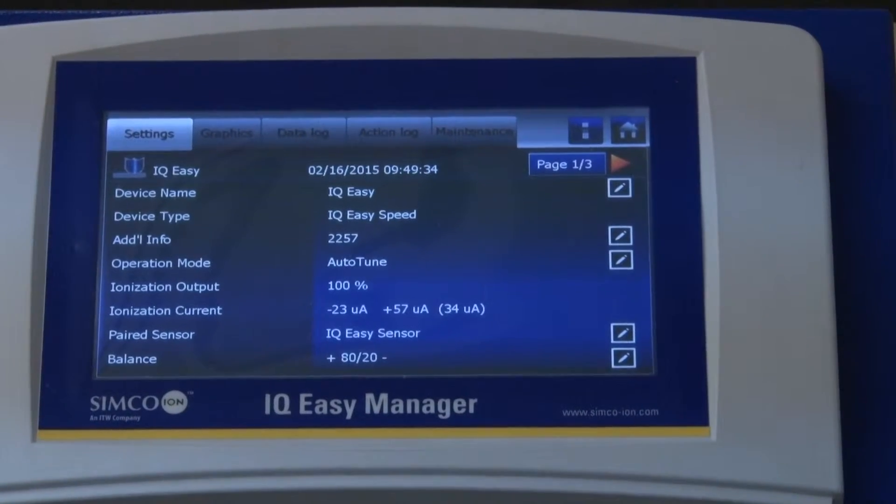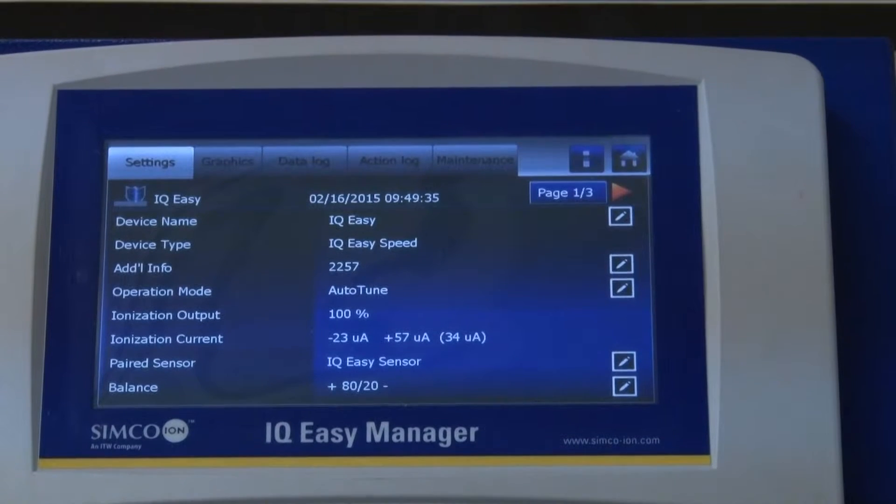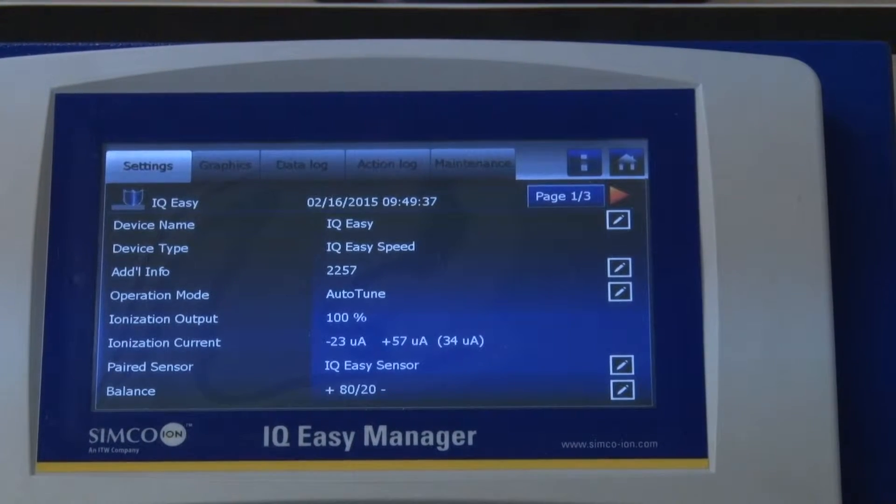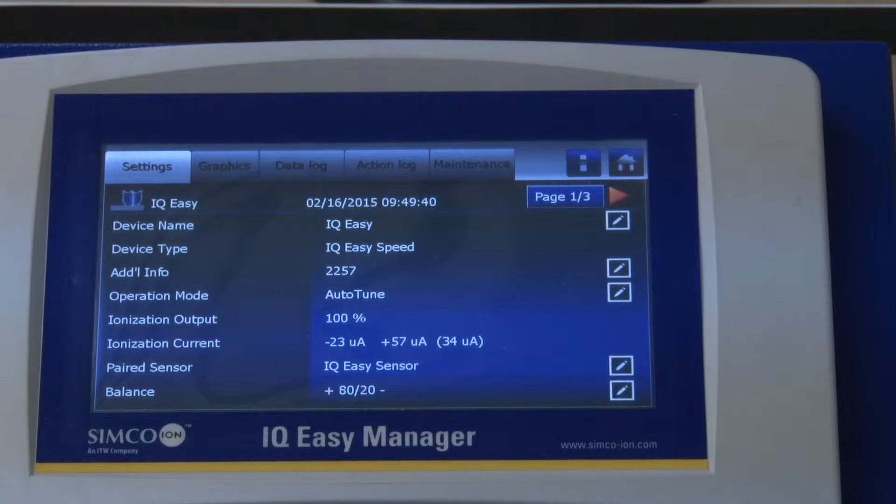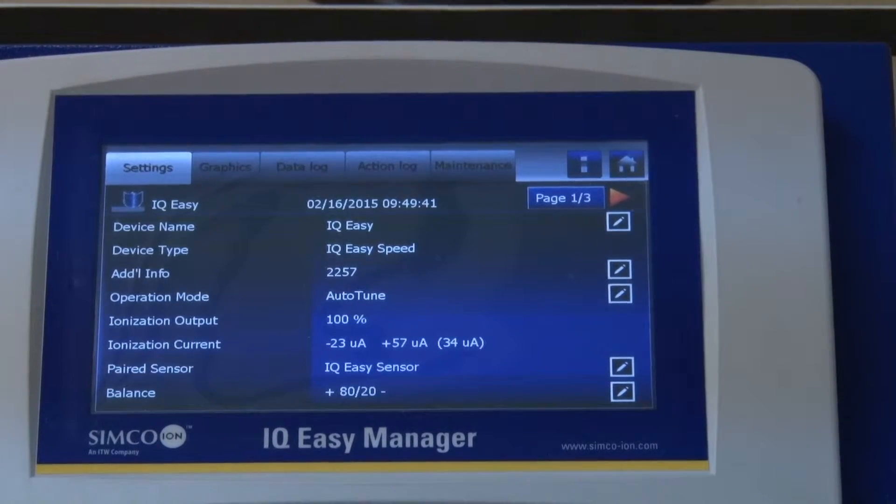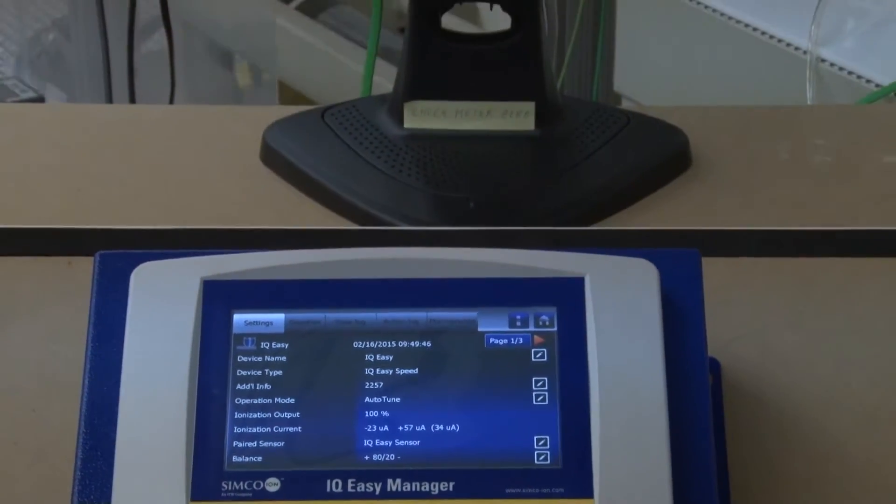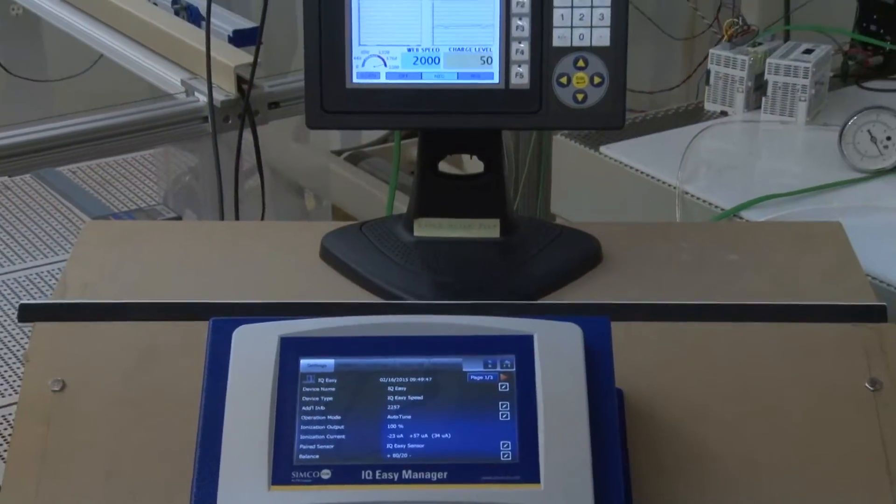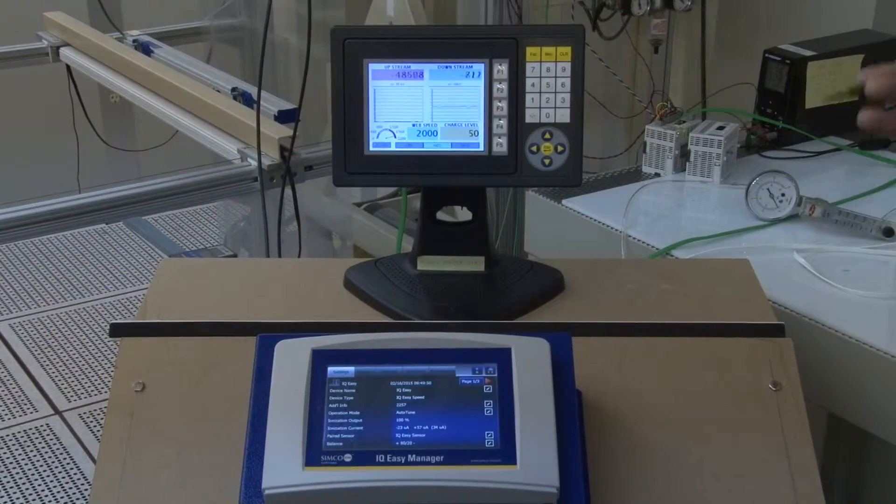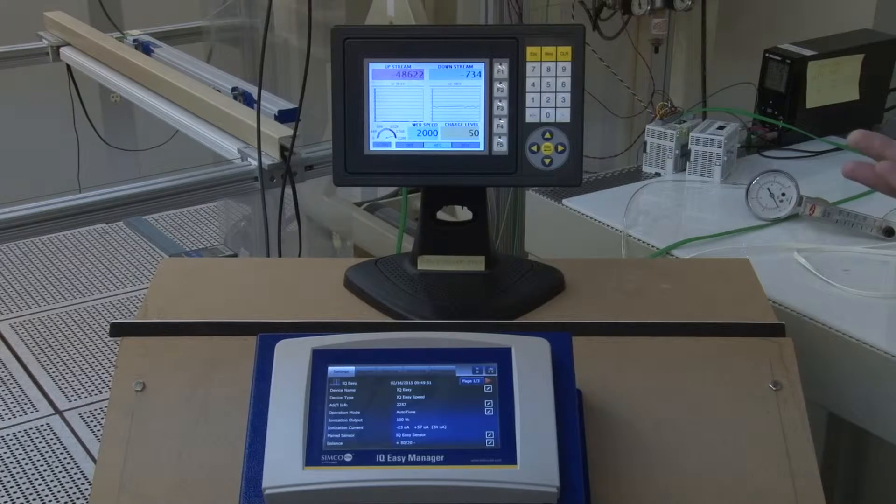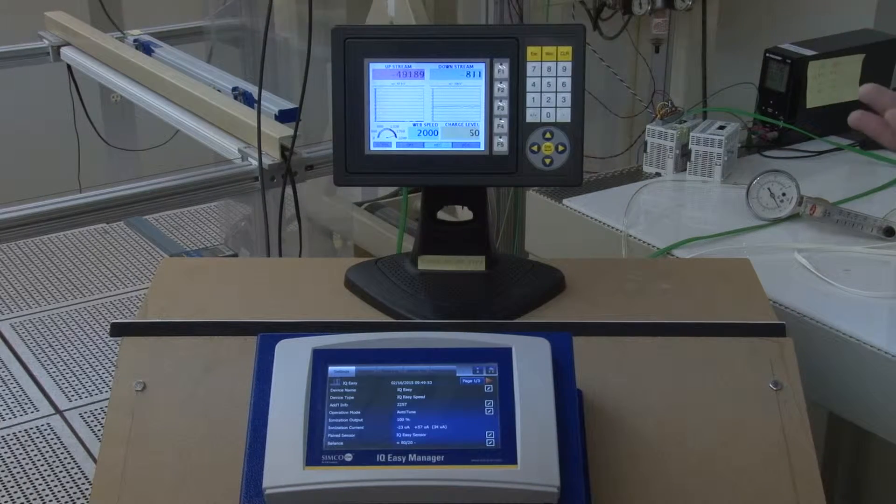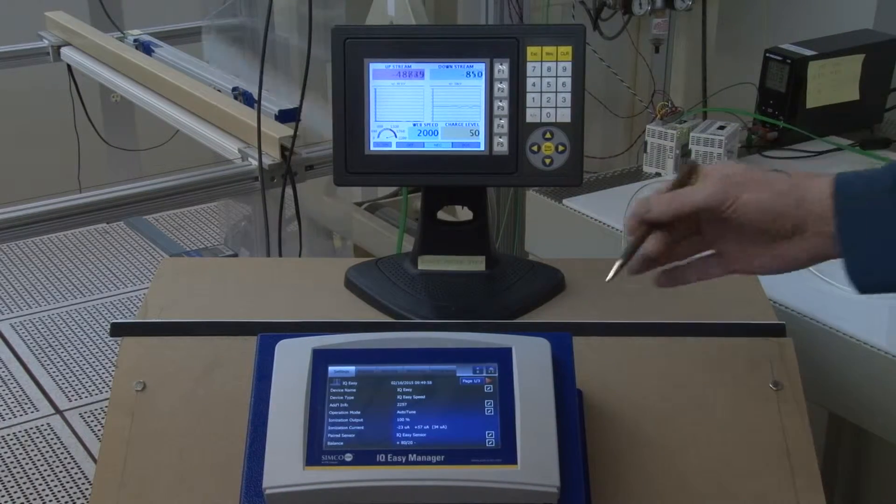For users that require even more detailed static elimination, we offer the closed-loop feedback mode. And in this mode, we're combining the IQEasy sensor bar and the IQEasy neutralizing bar into a closed-loop feedback mode, where the sensor bar steers the output of the neutralizing bar.